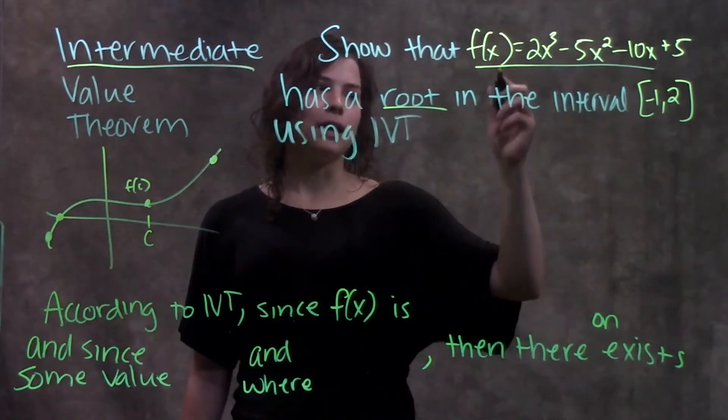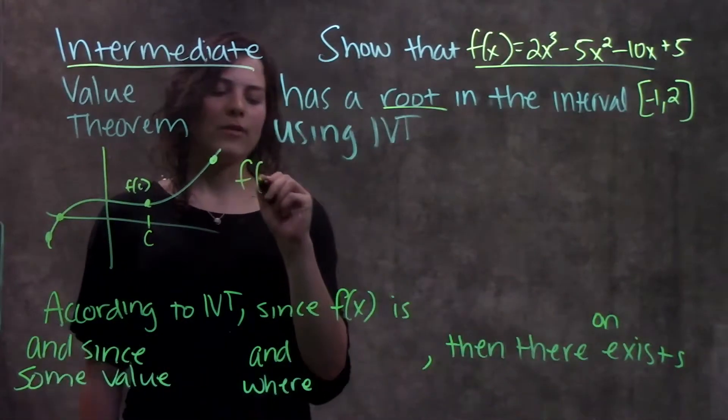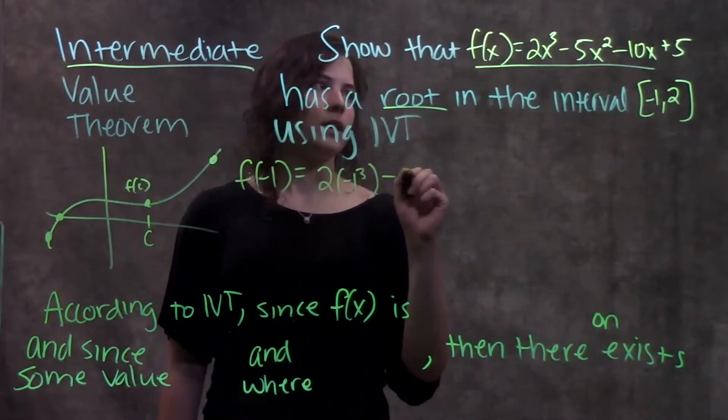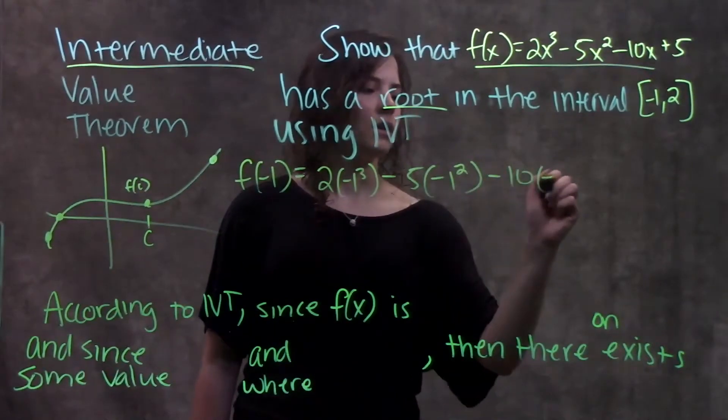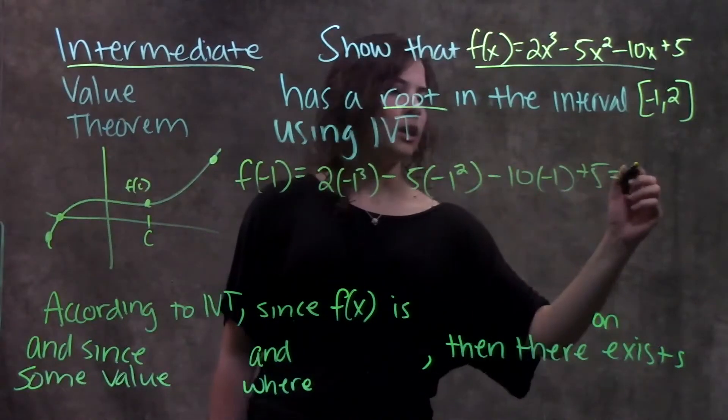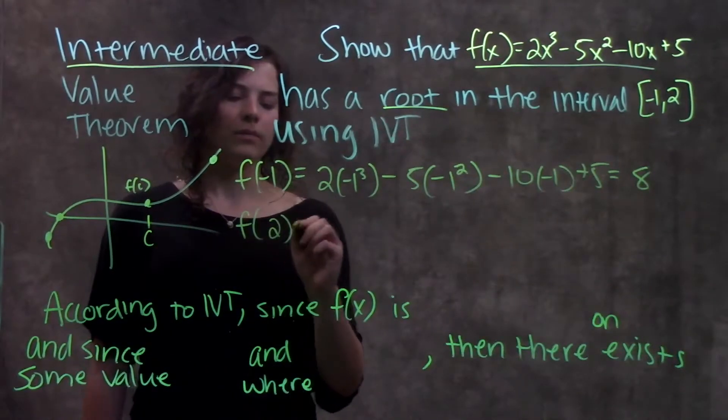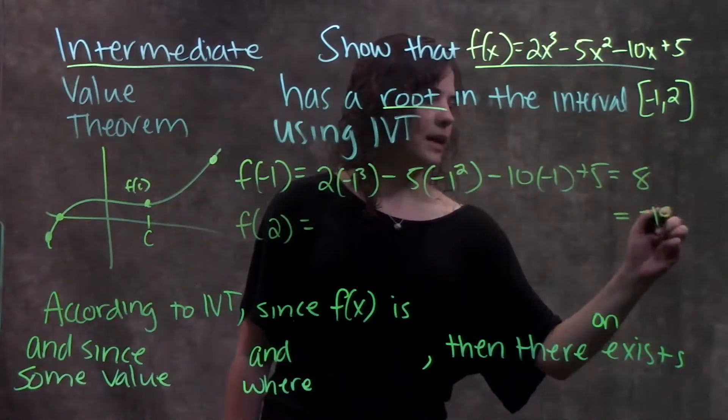Alright, so let's start with this interval, plug it in, see what happens. So we'll start with negative one. We plug f of negative one into our function. We get two times negative one cubed minus five, negative one squared, minus ten, negative one plus five. Plug all that in, you should get eight. Alright, and we're going to do the same thing with two. When you plug two in everywhere you see an x, you should get negative 19.